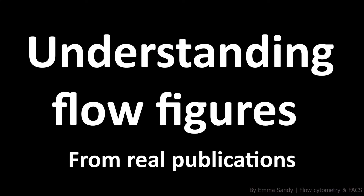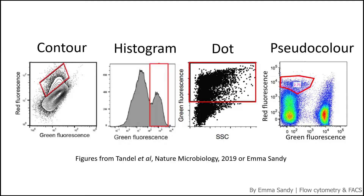Each flow experiment is completely different, using different antibodies and different gating strategies, but overall the point of flow cytometry is to analyze cells within a population. Now I'll talk you through understanding flow figures from real publications and introduce the types of figures that you're likely to see.